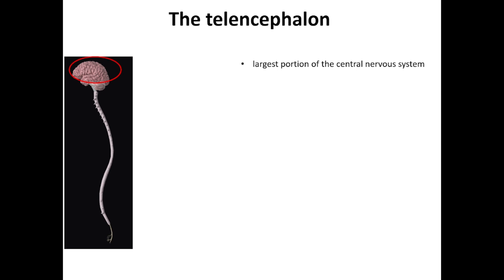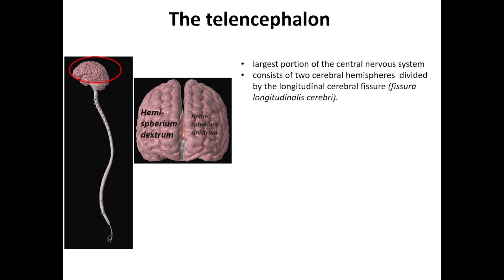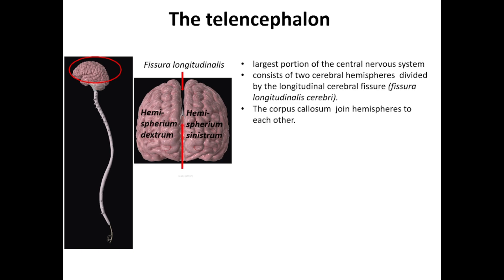The telencephalon, or cerebrum, is the largest portion of the central nervous system. The telencephalon consists of two cerebral hemispheres — hemisphérium cerebri dextrum and hemisphérium cerebris sinistrum — divided by the longitudinal cerebral fissure, fissura longitudinalis cerebris. The corpus callosum joins the hemispheres to each other. Conscious thought processes and all intellectual functions originate in the cerebral hemispheres. Much of the cerebrum is involved in processing somatic sensory and motor information, reaching conscious awareness, and exerting direct voluntary or indirect involuntary control over somatic motor neurons.